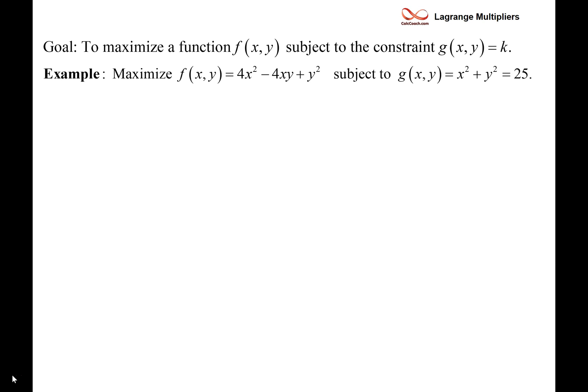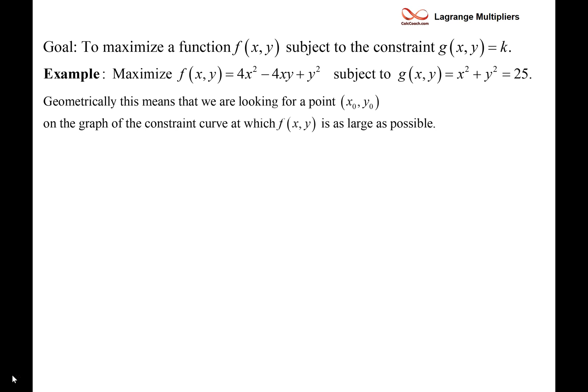Here's an example that's going to drive the explanation. We have a function called 4x squared minus 4xy plus y squared — a multivariable function of x and y, little f. And the constraint is that x squared plus y squared must be equal to 25. Geometrically, this means we're looking for a point x naught, y naught on the graph of the constraint curve at which the function f is as large as possible. That constraint curve is a circle of radius 5.